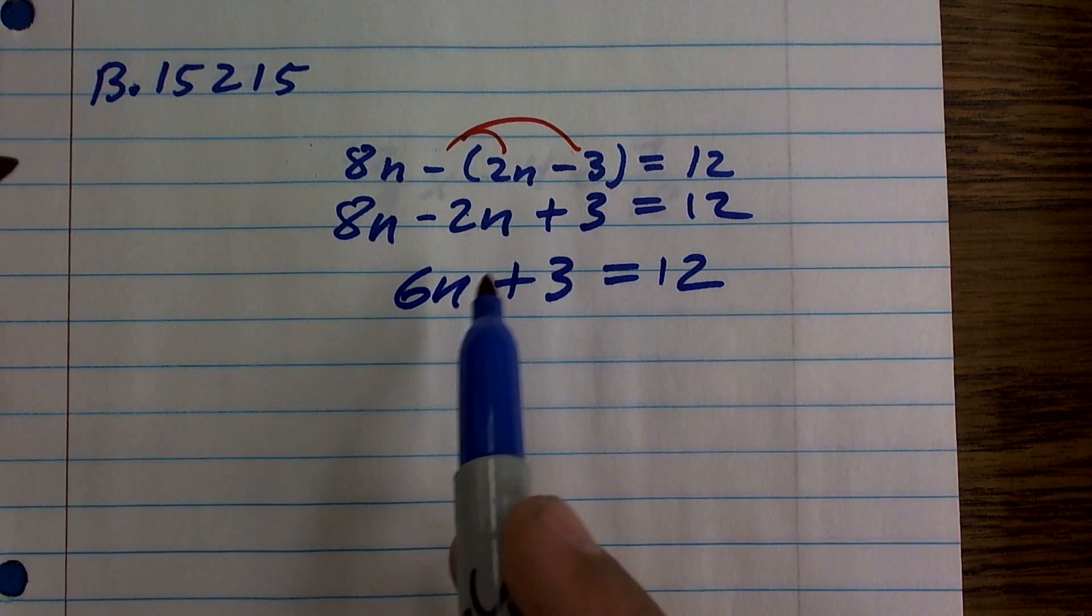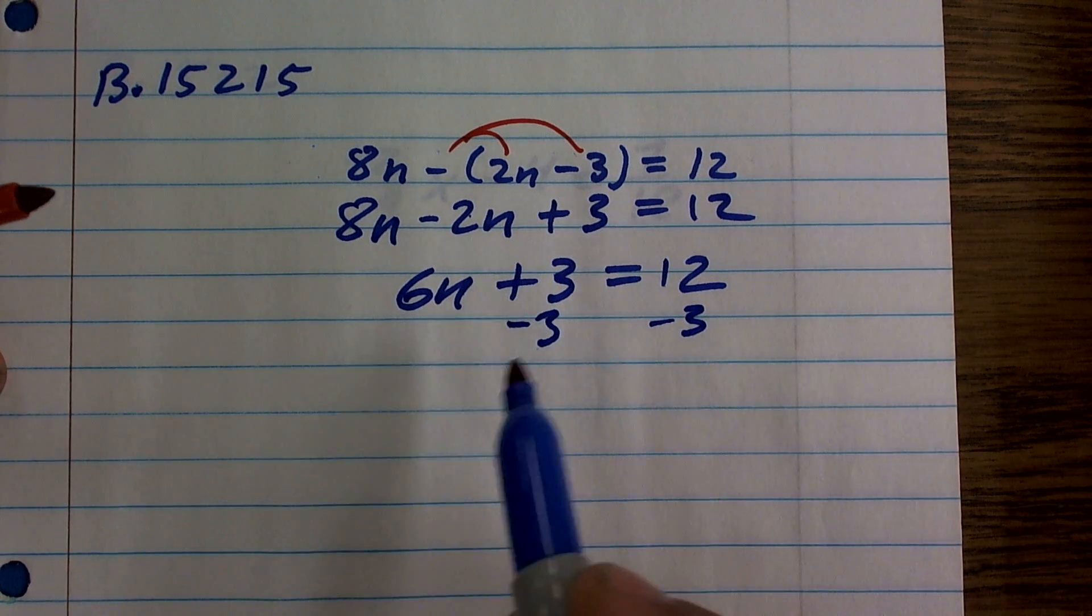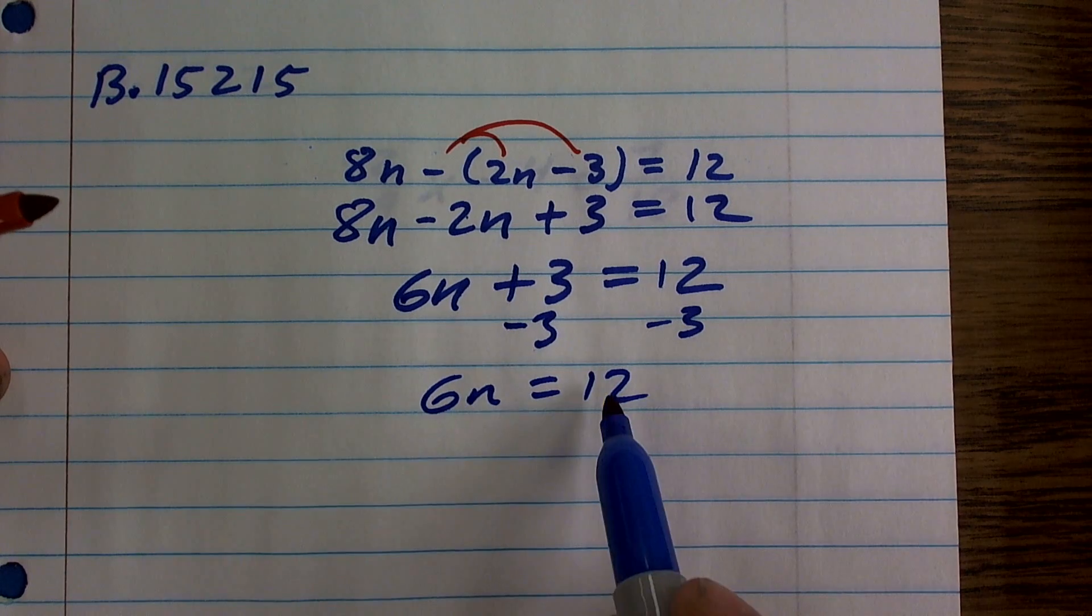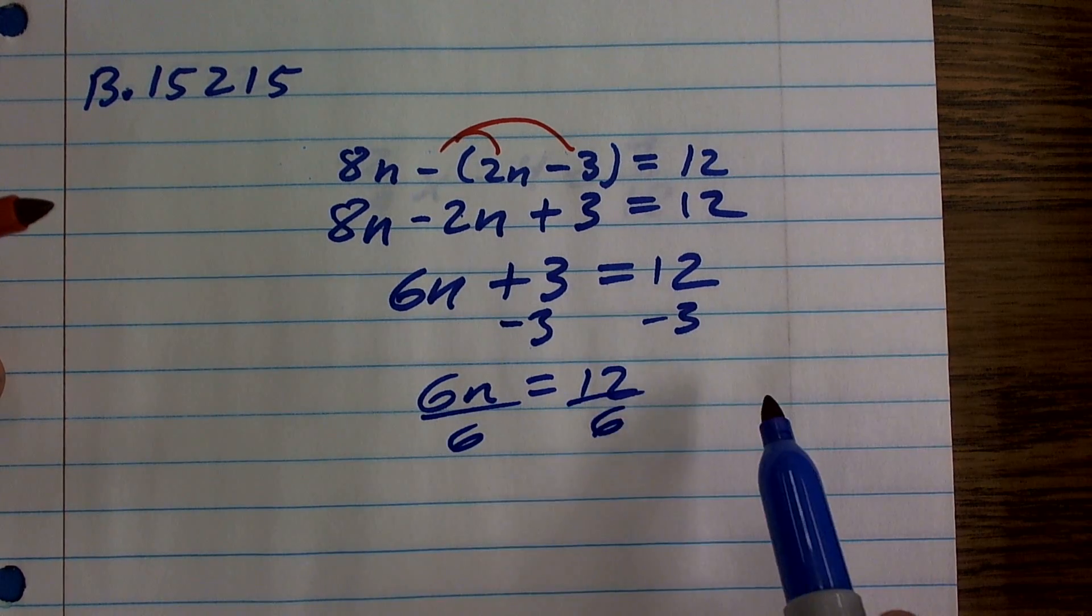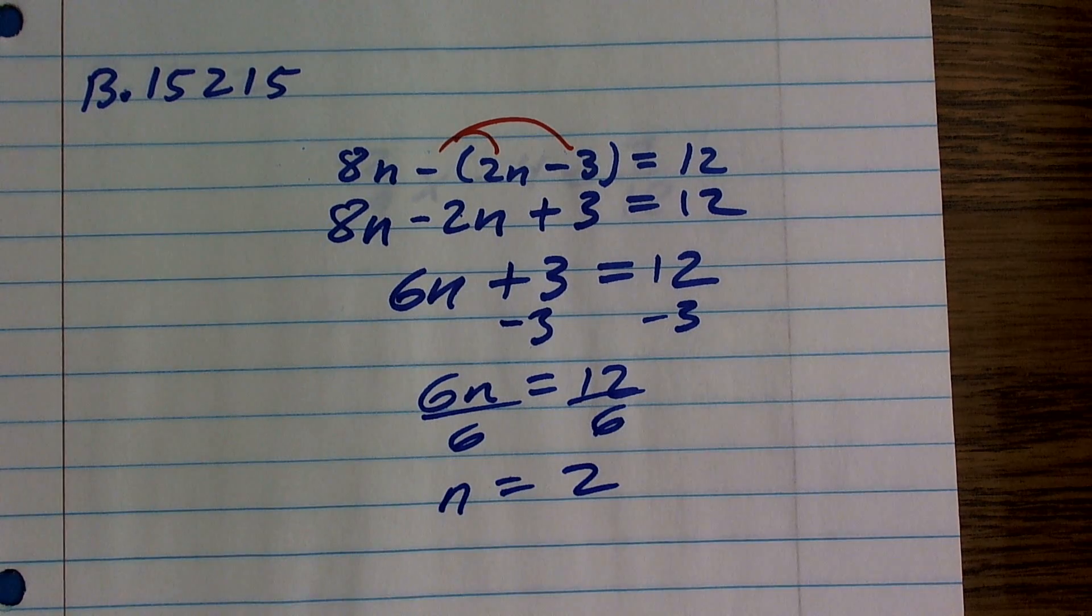Since I'm adding 3 to my n, I'm going to subtract 3 on both sides by subtraction property of equality. Now I produce the equivalent equation of 6n equals 12. Now I undo multiplication by dividing by 6 on both sides by the division property of equality. And my final solution is n equals 2.